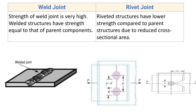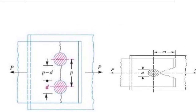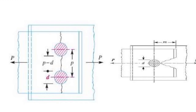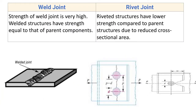For rivet joint, riveted structures have lower strength compared to the parent structure due to the reduced cross-sectional area. Since holes are drilled over the component to be joined, it reduces the cross-sectional area, which is why the strength of the riveted joint is reduced.